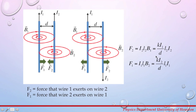Plugging in the values for the magnetic field B1, we get the force equation. Similarly, the force that wire 2 exerts on wire 1 is given by the same form of equation. If we reverse the current in the second wire, the equations stay the same. The difference is that when currents are in the same direction, the force between the two wires is attractive, and when the currents are in opposite directions, the force between them is repulsive.